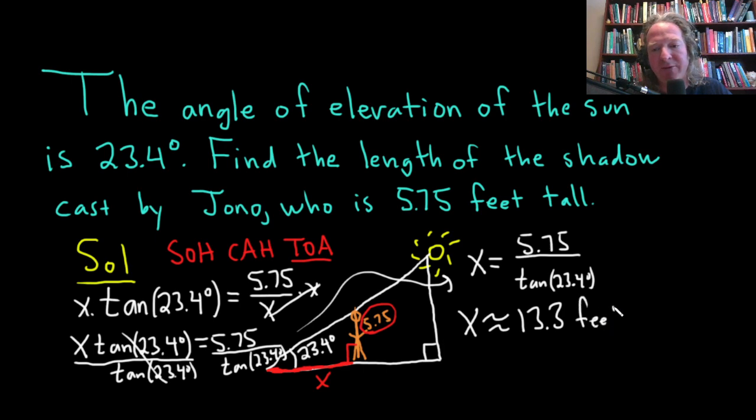The units are feet. So that is the length of the shadow cast by Jono, who is 5.75 feet tall, when the angle of elevation of the sun is 23.4 degrees.